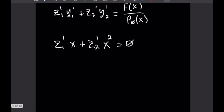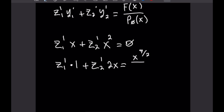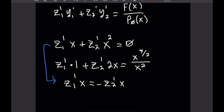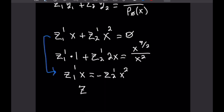For the second equation, z1'·(y1') = z1'·1 plus z2'·2x equals x^(9/2)/x². From the first equation we can rearrange: z1'·x = -z2'·x², and dividing by x gives z1' = -z2'·x. We will use this substitution in the second equation.